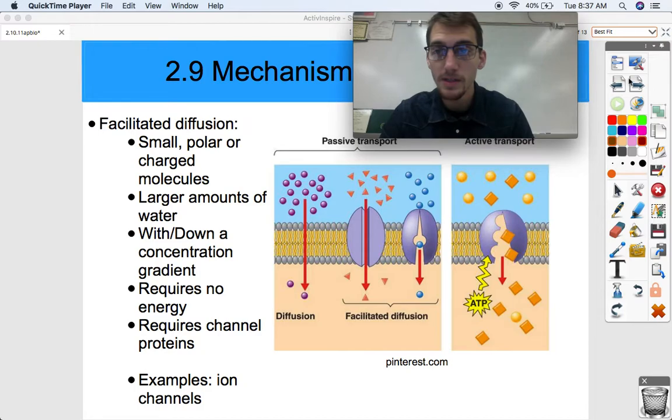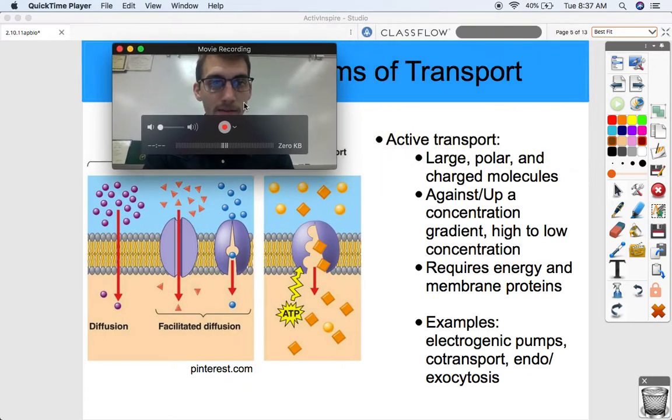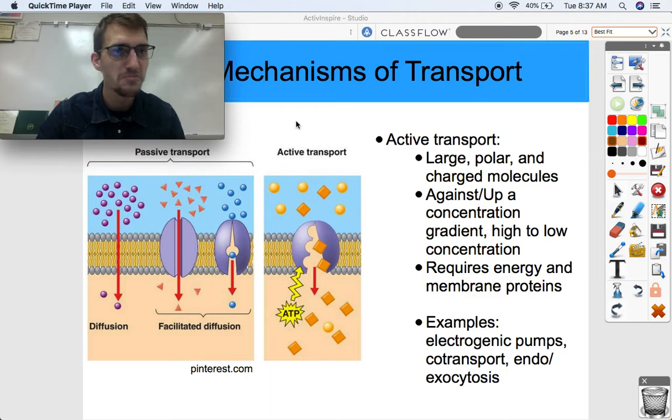That is facilitated diffusion. Active transport is a bigger topic than the other two. It involves the motion of large polar and charged molecules, things that cannot absolutely no way get through the bilayer, but particularly large molecules too, because smaller charged molecules can go through facilitated diffusion. But active transport moves things against or up the concentration gradient. Thus, it requires energy and membrane proteins to be able to do that.